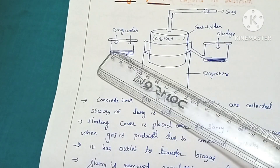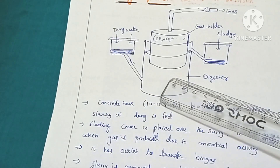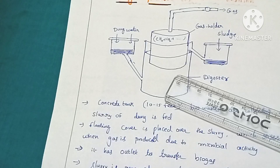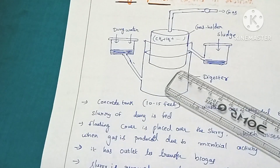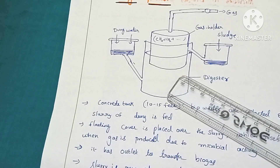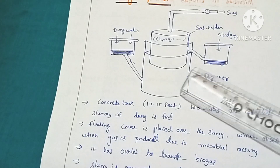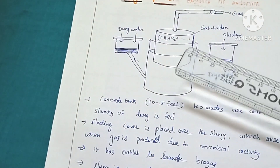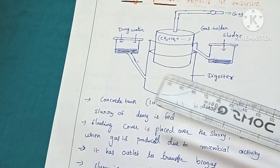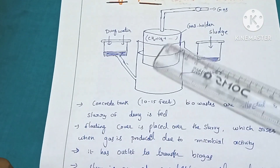The dung and water mixture — the slurry — is released into the concrete tank. Due to the activity of the methanogenic bacteria, they digest the dung and finally release methane gas. Above this concrete tank, there is a floating cover placed over the slurry. Whenever the methanogenic bacteria release methane, this floating cover rises.